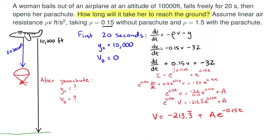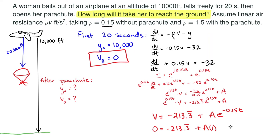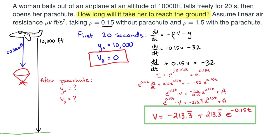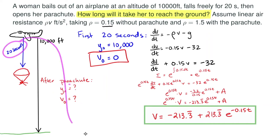Using our initial velocity of 0, we can solve for constant A. Inputting time equals 0, our velocity should be 0, so 0 equals negative 213.3 repeating plus A, giving A equals positive 213.3 repeating. Replacing that in our expression gives us our velocity equation. After 20 seconds we release the parachute and restart with a new initial velocity and height, so we plug t equals 20 into the velocity equation to get our new initial velocity.